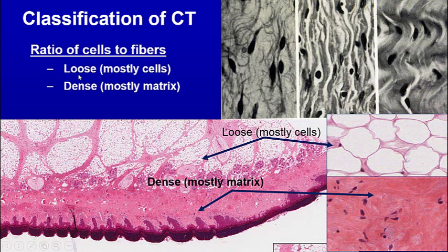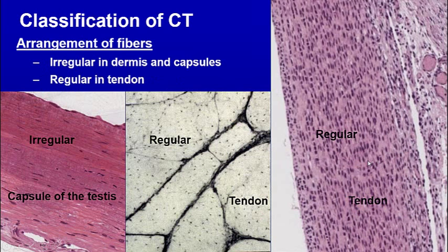Connective tissue proper is classified as loose — mostly cells — or dense — mostly extracellular matrix, which is collagen. Here we can see the dense matrix with few cells, as opposed to here where we have lots of cells. These are the fat cells, the chicken wire cells again. So dense has more fibers and fewer cells.